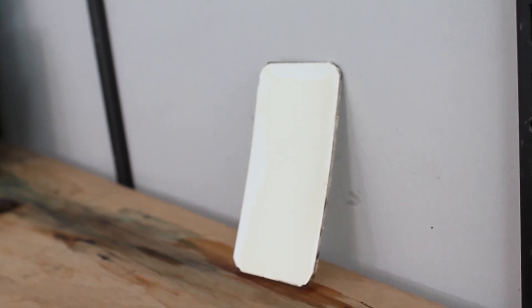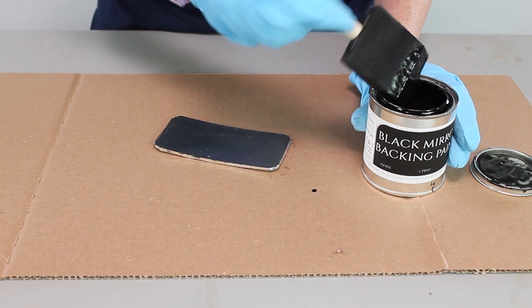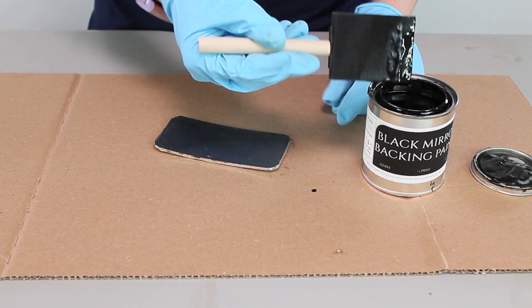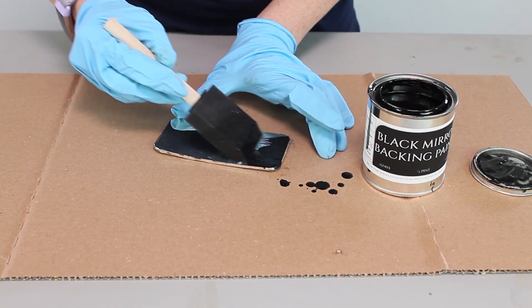You'll want to make sure that you allow it to dry completely. And once that silver is fully dry, then you're going to go ahead and paint the silver.